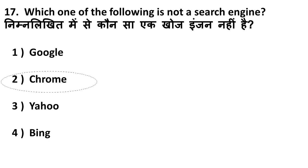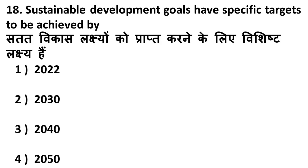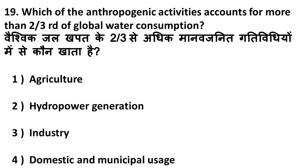Next question: sustainable development goals have a specific target to be achieved by which year? The sustainable development goals have a specific target to be achieved by the year 2030. The correct answer is 2030.